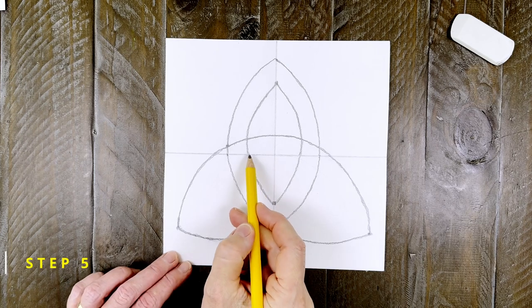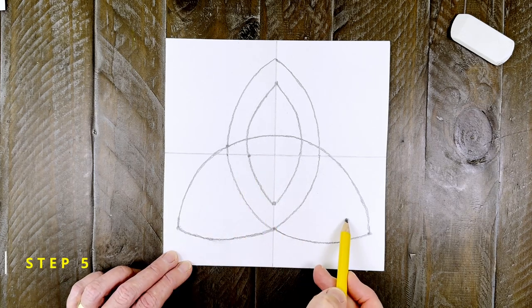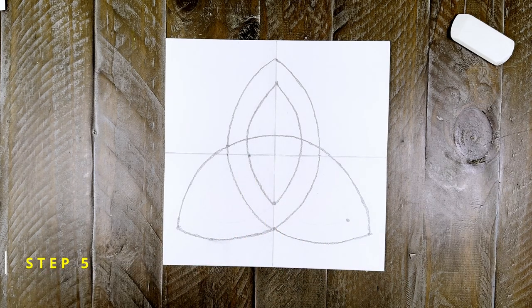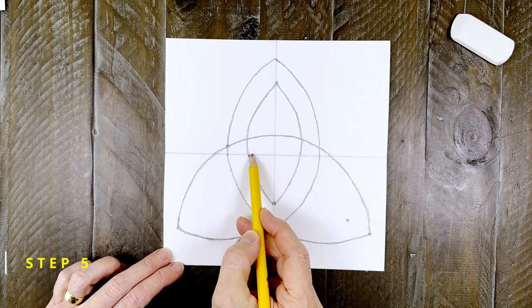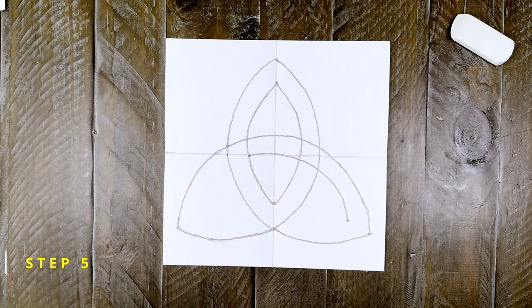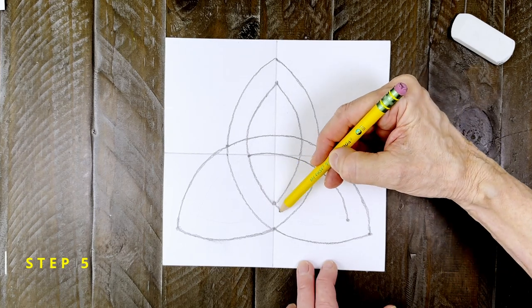Step number five. Plan the same inside shape for the next petal with two dots. Connect one side with a curve. And then do the same for the other side.